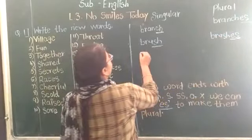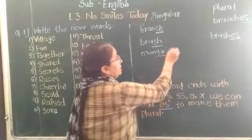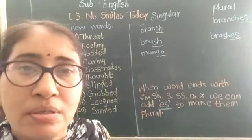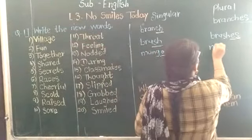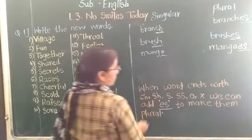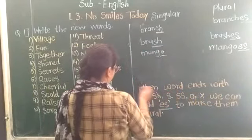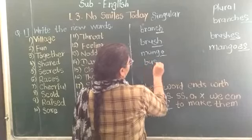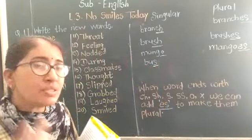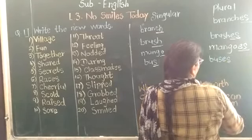Next is O. For example, mango — M-A-N-G-O — ends with O, so we add ES to make it plural. It becomes mangoes. Then for nouns ending in S, for example bus — B-U-S — we add ES. It becomes buses.